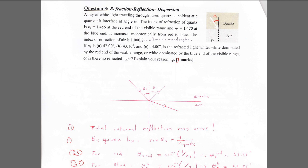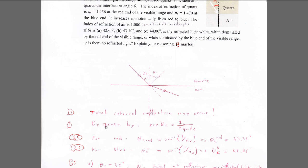If theta equals A, B, or C, is the refracted light white, dominated by red, dominated by blue, or is there no refracted light? We will have to be careful about total internal reflection, so let's look at that.